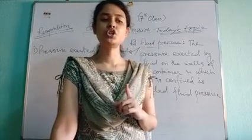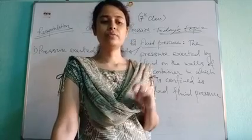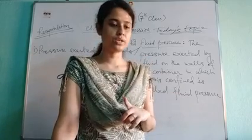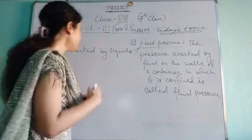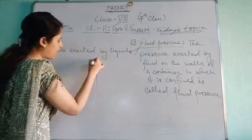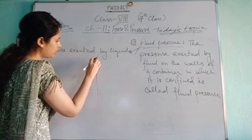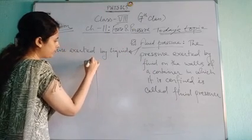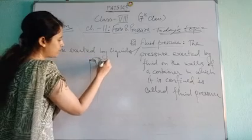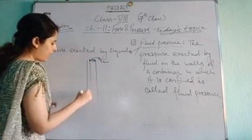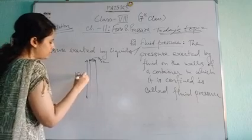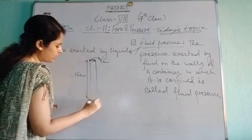Its diameter should be 5 to 7.5 cm. Let us draw the figure — here we have taken a glass tube with a diameter of 5 cm and a height of 15 cm.